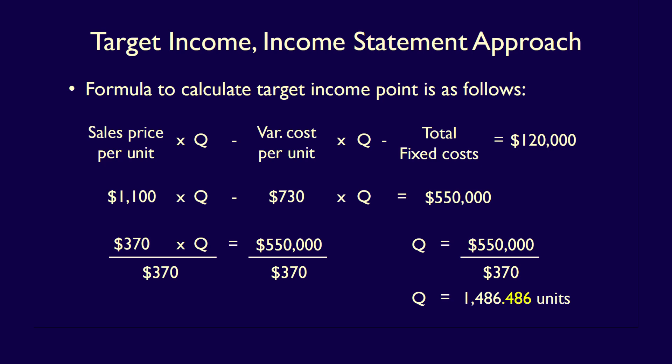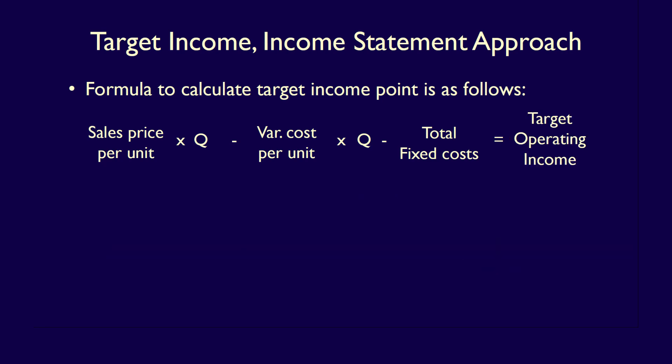Since a company cannot produce 0.486 units, we have to round up to the next whole unit. Therefore, the company would have to produce 1,487 units to earn a target before-tax income of $120,000. We always round up — not down — because rounding down would result in operating income below the target. The formula is: sales price per unit × Q minus variable cost per unit × Q minus total fixed costs equals target operating income.